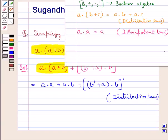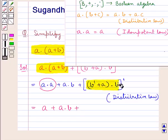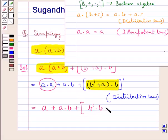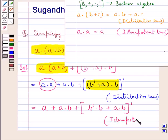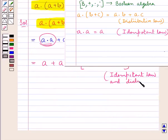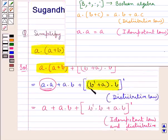For the idempotent law, a into a is equal to a. So for a into a we write a. This gives us a plus a into b plus, and then applying the distributive law to the remaining expression, we can write b complement into b plus a into b, the whole complement.